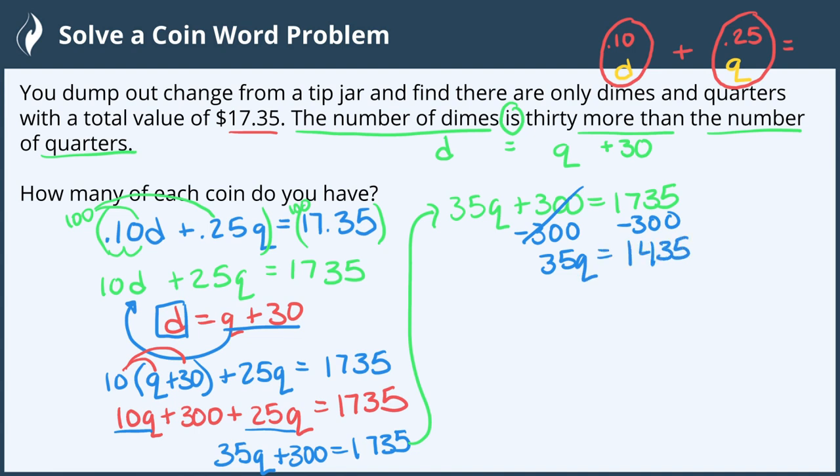To continue isolating the variable, we divide both sides by 35, and we get Q equals 41. This means there are 41 quarters.